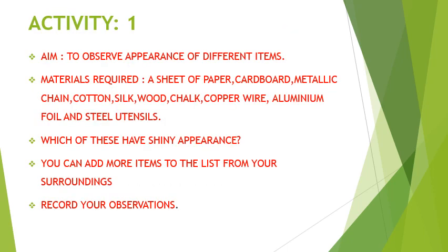Let's move on to activity 1. The aim of this activity is to observe the appearance of different items. Materials required: a sheet of paper, cardboard, metallic chain, cotton, silk, wood, chalk, copper wire, aluminium foil, and steel utensils.